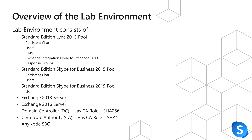We have a domain controller with a CA role that has a SHA-256 CA, and we also have a standalone CA that is based off a SHA-1 certificate. We also have an Anynode SBC. The reason we have a SHA-1 certificate CA is that back in the days of Lync 2013, the default for a certificate authority was SHA-1. In today's world, we need to move away from SHA-1 and make sure we are using a SHA-256 CA.